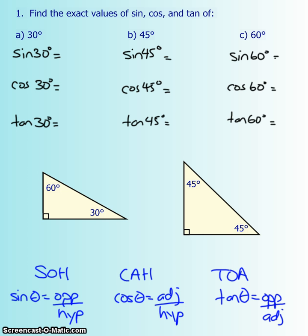What do you use these triangles for? In practice, you'll be asked to find the exact values — no decimals — of the three trig ratios. Sine is SOH: opposite over hypotenuse. Cosine is CAH: adjacent over hypotenuse. Tangent is TOA: opposite over adjacent.